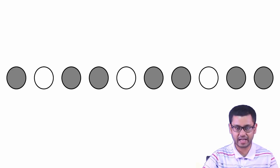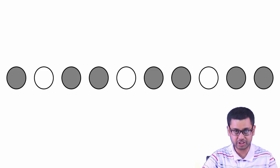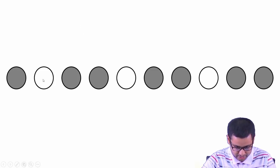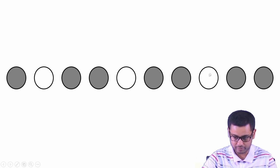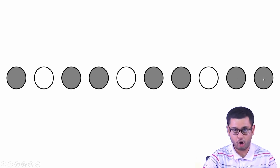Let us look at the screen. Imagine I have a set of 10 bulbs — they are fixed in their location and do not move; they can only turn on or off. Here we see that there are 3 bulbs which are turned on — the white bulbs mean they are on, and the grey bulbs mean they are off.